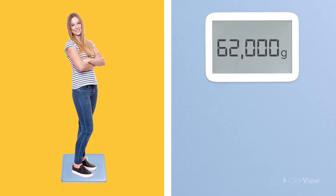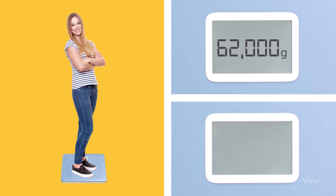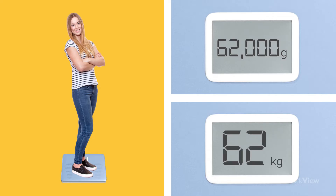The average adult has a mass of around 62,000 grams — that's a really big number. Did you know that we can convert this number into one that is much simpler? By converting between the units of mass, we can see that 62,000 grams is equal to 62 kilograms. That's better, isn't it! The unit we choose depends on the amount of mass we are measuring.